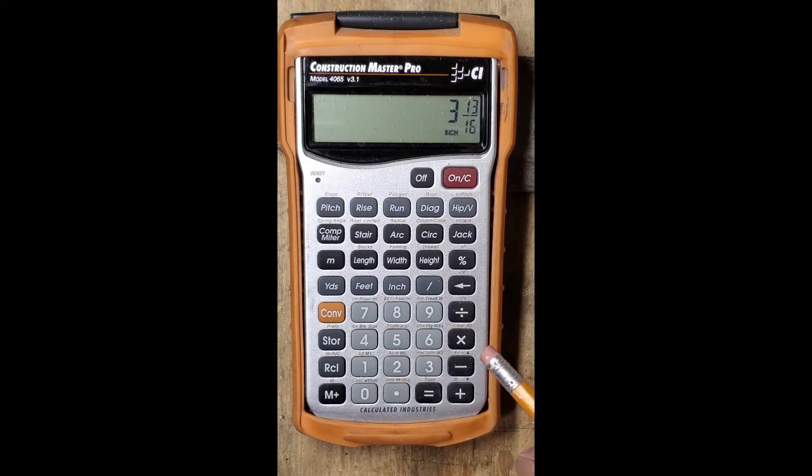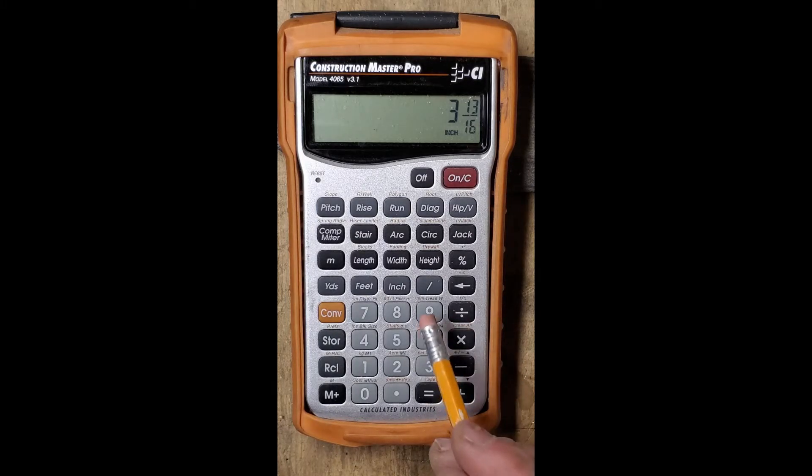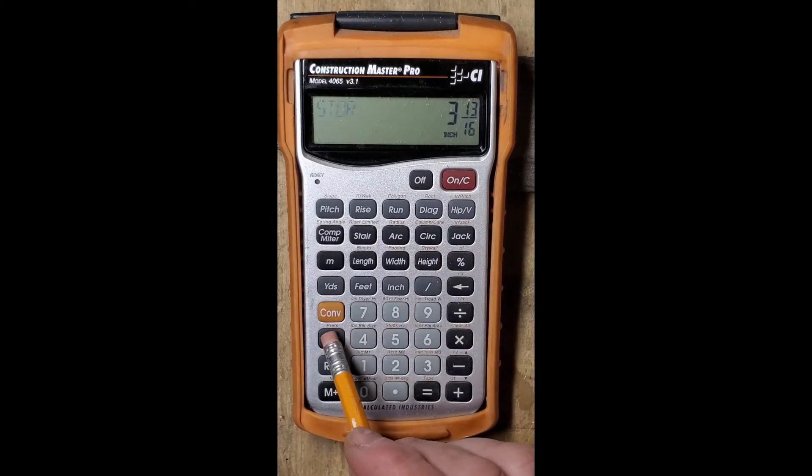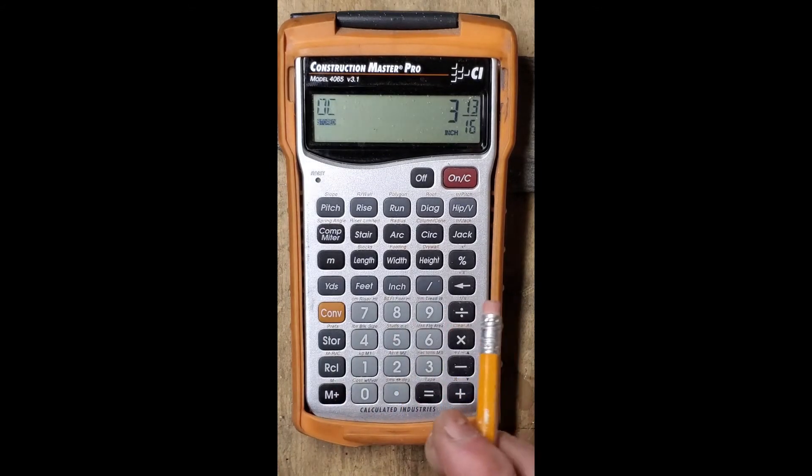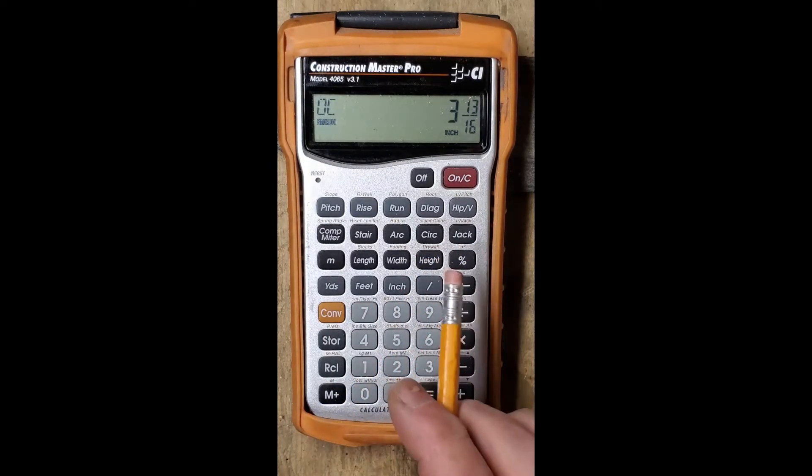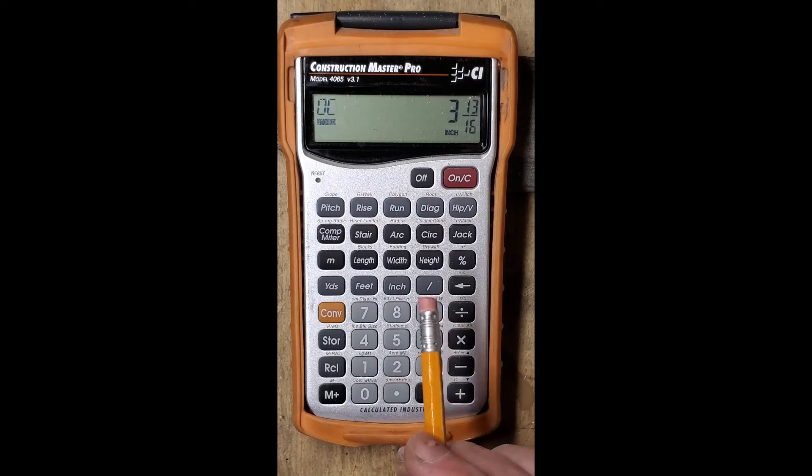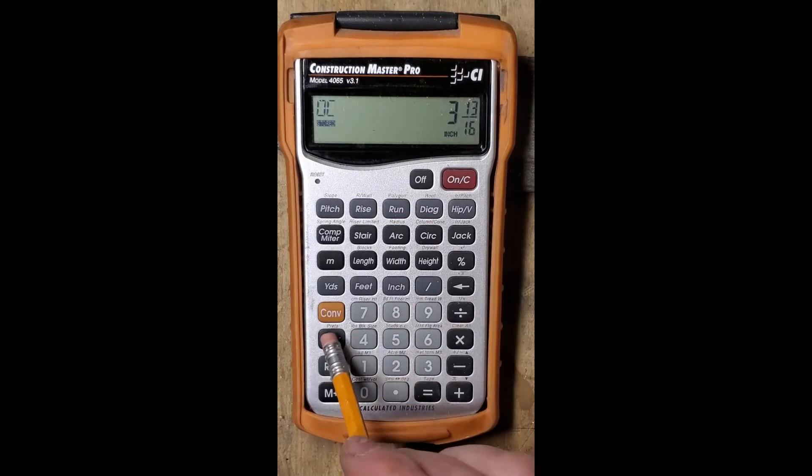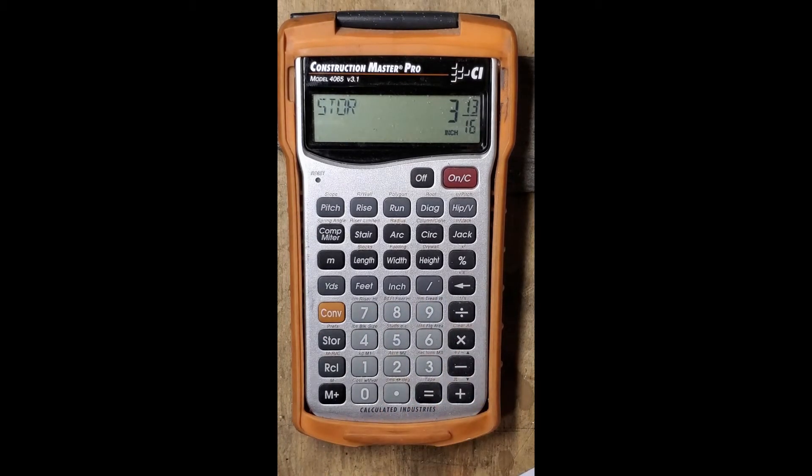So what we need to do is store that for our on-centers. So we hit store 5 and that changes it to 3 and 13 sixteenths on-centers. So we're going to store that and that's going to be our on-centers.